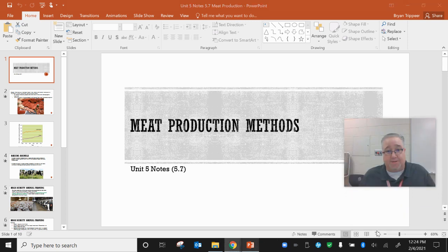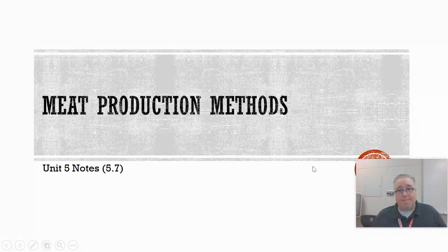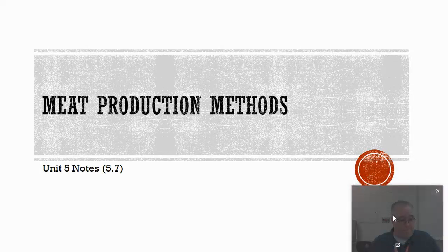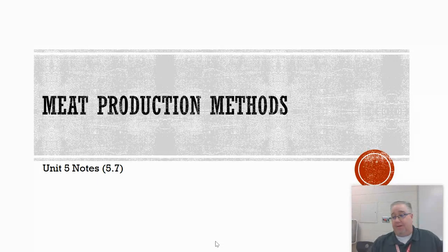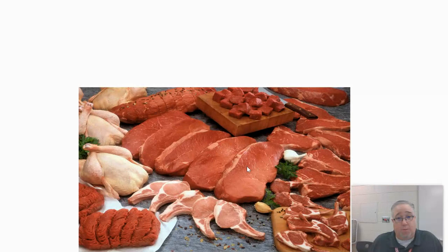Alright, AP Environmental Science, we are continuing with Unit 5, Topic 5.7, which is on meat production methods. We've been talking a lot about grains and agricultural practices that help us grow crops — all these Green Revolution techniques and the pros and cons associated with those — but now we're going to shift to meat production.